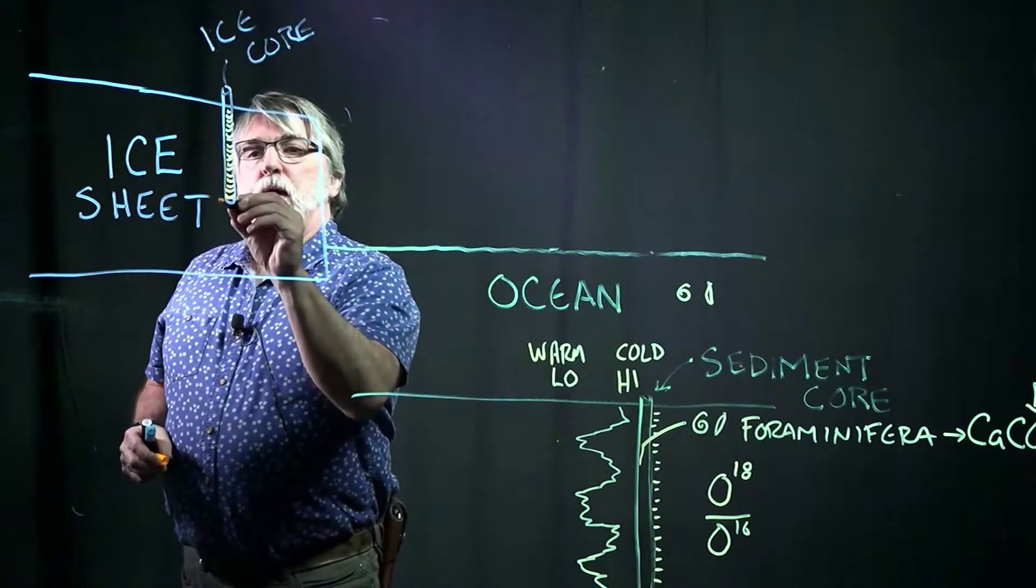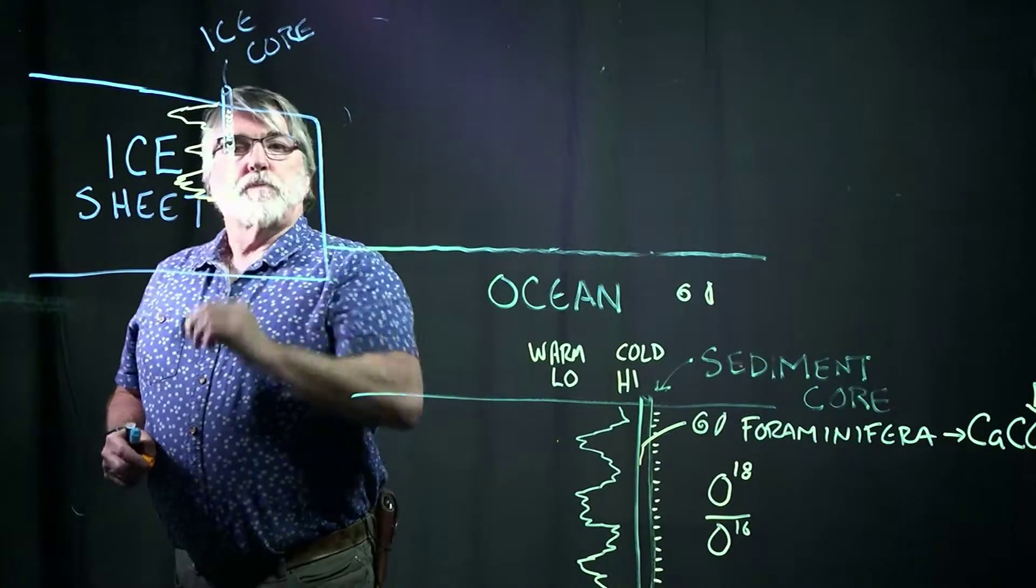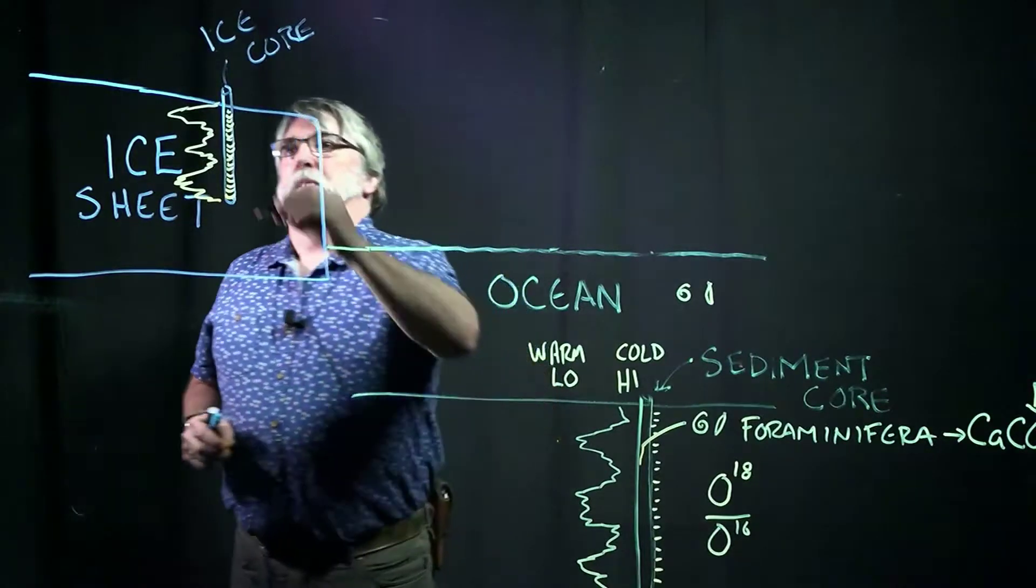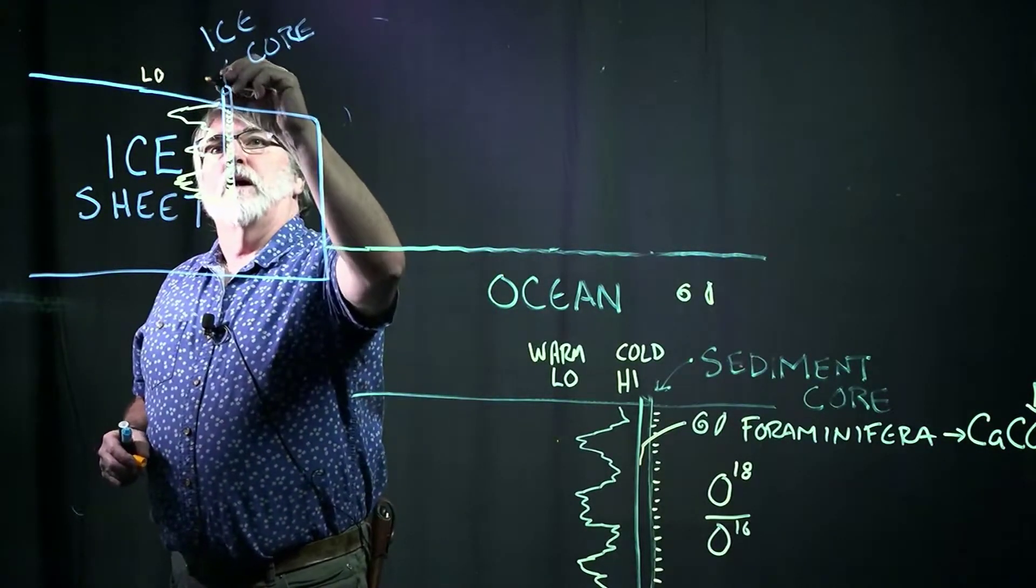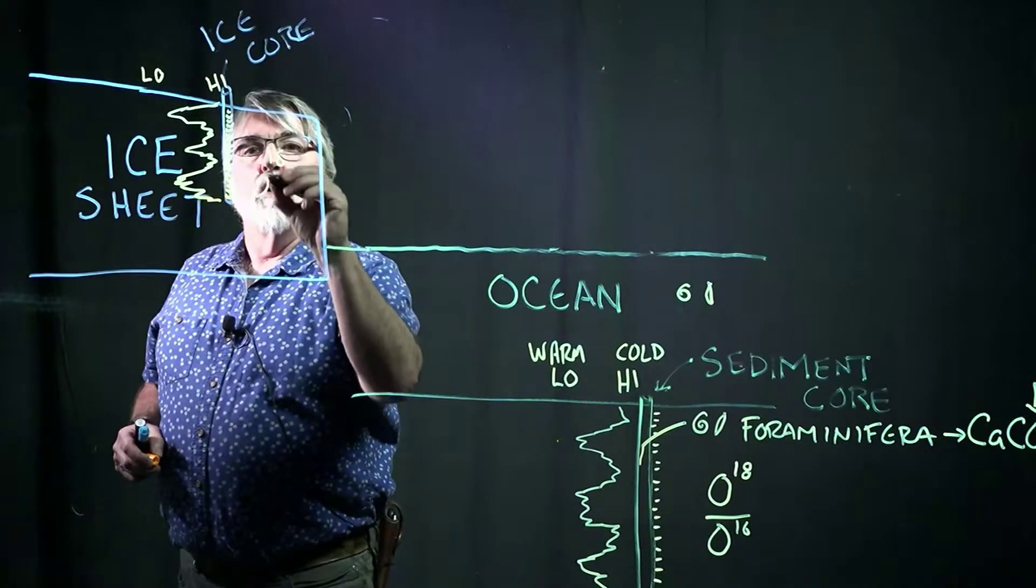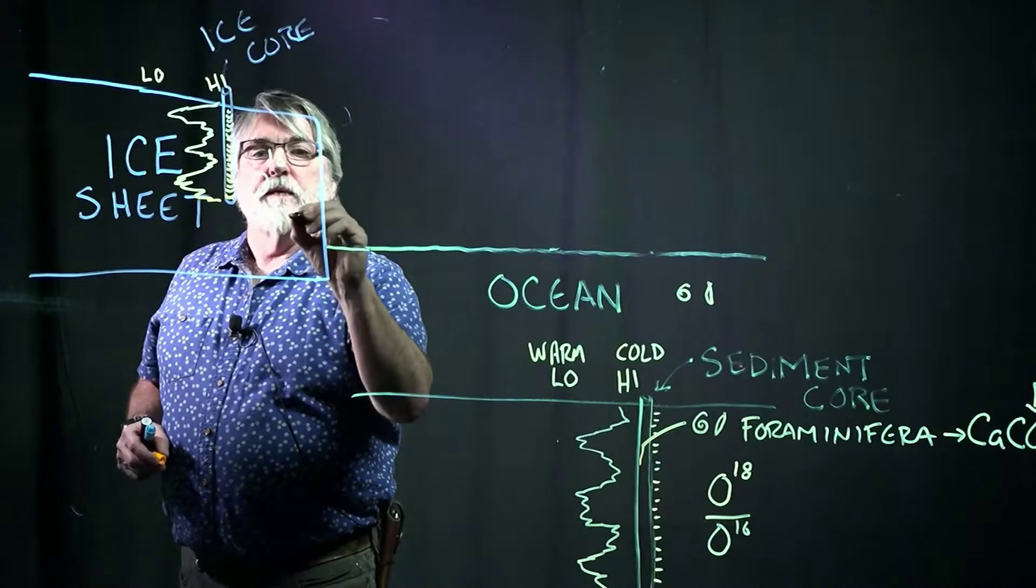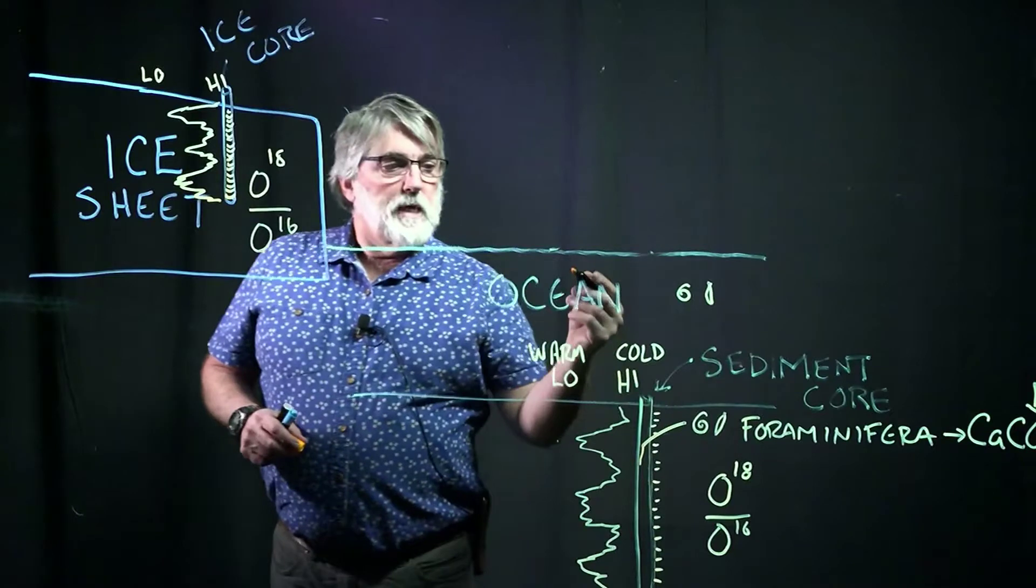And we can create a similar kind of curve for the ice where we get a wiggly curve just like we did with the marine sediment core. And we have low values and we have high values of that isotopic ratio O18 to O16.